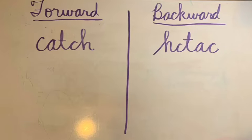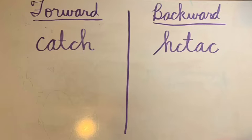On the forward side, they'll write their spelling word the regular, correct way. And then on the right side, the backwards side, they would write the word backwards. We only do this with our book words. Vocabulary and Latin words they have, we write those two times. This will be only for words 1 through 17 in their book; their vocabulary and Latin words they can write two times after that.